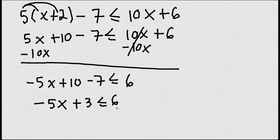Finally, I'm moving this guy to the right, because remember, all the numbers should be together. So, we're going to have negative 5x, lesser equals 6 minus 3 is equal to 3.